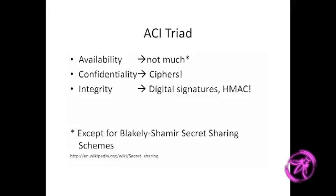There is an exception for availability: the Blakley-Shamir secret sharing scheme — a class of algorithms that can work very well for availability, but they're very rarely used in the real world. There are commercial products that support it, and even an open source implementation called SSSS — the Shamir Secret Sharing Scheme Software — but I have not actually seen anyone use it.